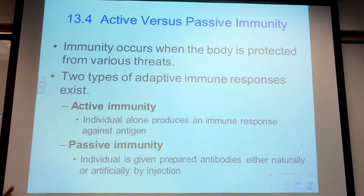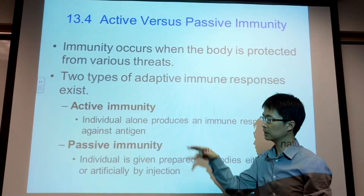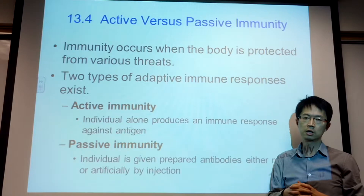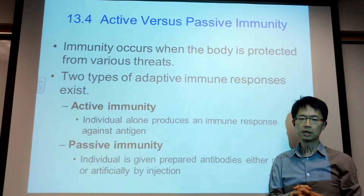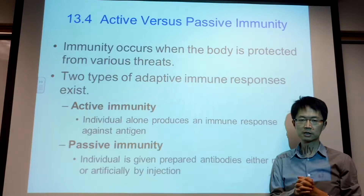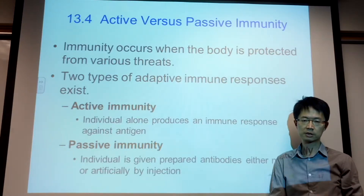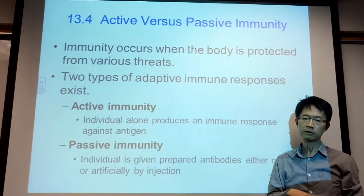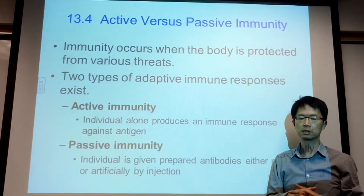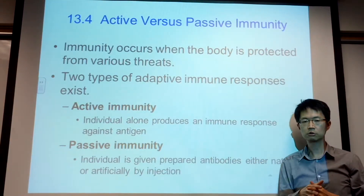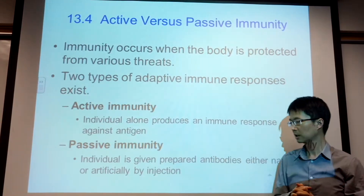When we talk about immunity, we have different types: mainly active and passive. Active immunity is when you get the flu and your body goes through five to seven days of non-specific responses, then starts the adaptive immune response, meaning your body starts making antibodies. You can also get active immunity from a flu shot.